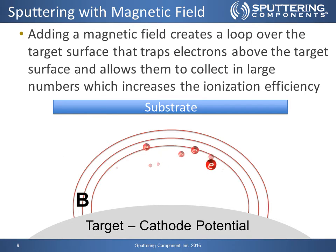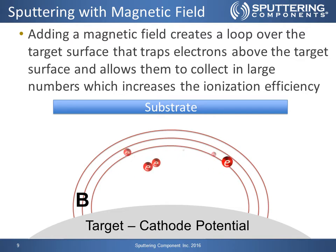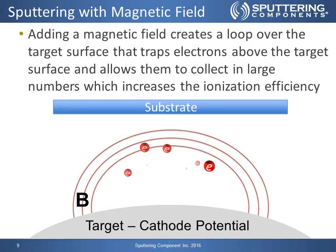If we use Penning's discovery and add a magnetic field that creates a loop over the target surface, it traps electrons above the target surface and allows them to collect in large numbers, which increases the ionization efficiency.